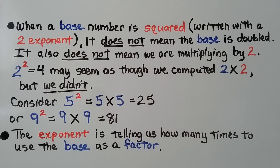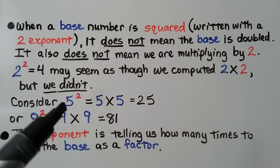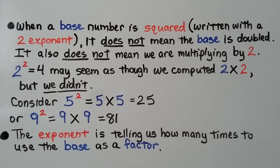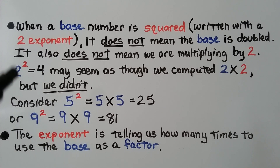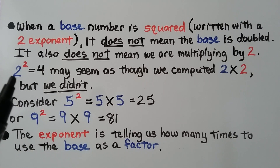When a base number is squared — written with a 2 exponent — it does not mean the base is doubled, and it does not mean we are multiplying by 2. 2 to the 2nd power equaling 4 may seem like we multiplied the base by the exponent, but we didn't. Consider 5 to the 2nd power: that's 5 times 5, equal to 25 — not 5 times 2 equals 10. And 9 to the 2nd power is 9 times 9, equal to 81 — not 9 times 2 equals 18. The exponent tells us how many times to use the base as a factor — we're doing base times base.